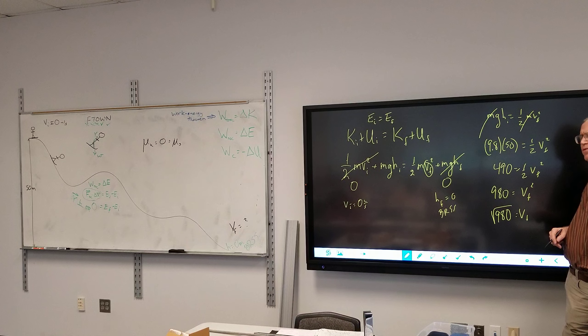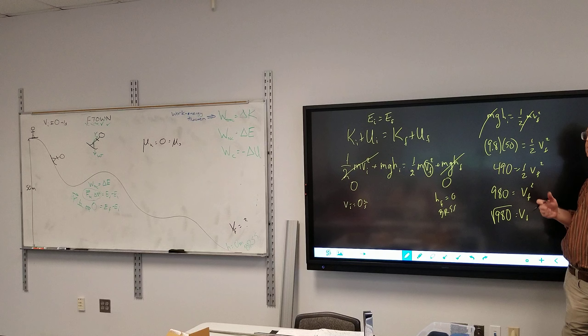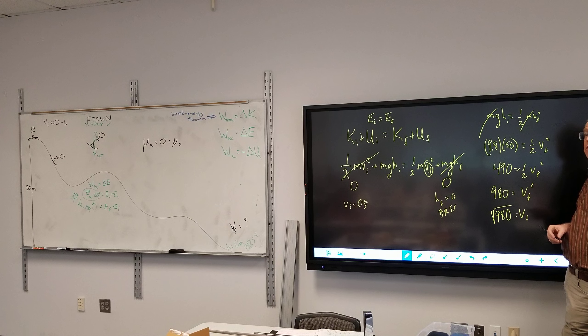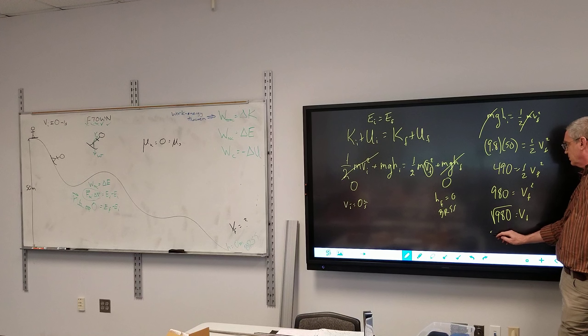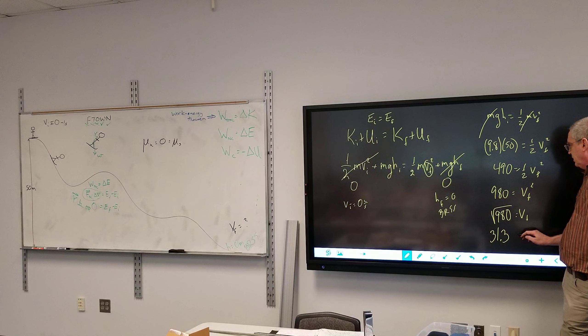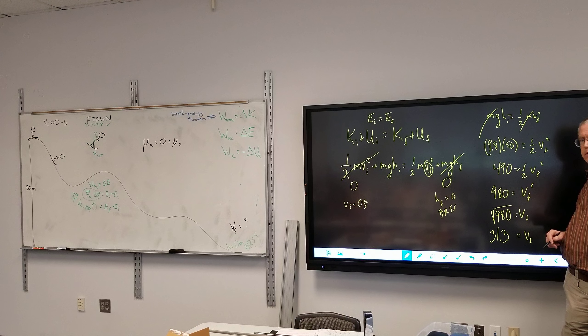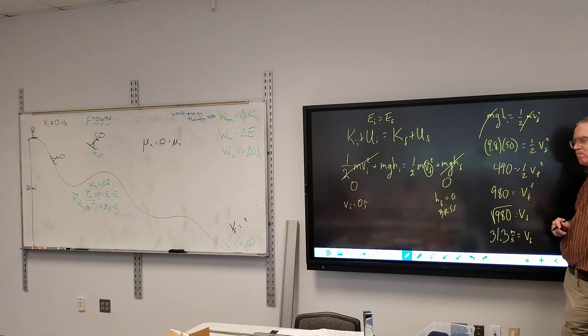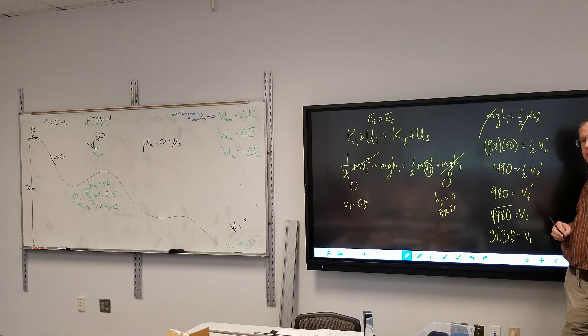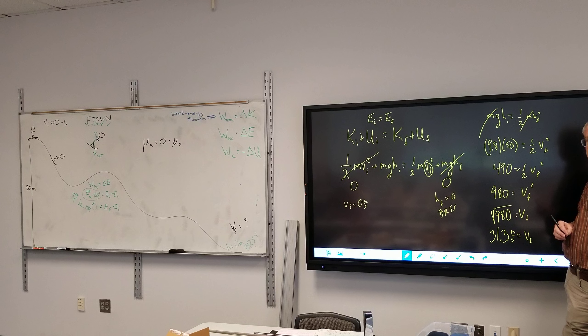980 is equal to final speed squared. And the final speed is the square root of 980. And the final speed is equal to 31.3 meters per second. Units? 31.3 meters per second. Question stay here because I'm going to make it look more difficult in just a moment.